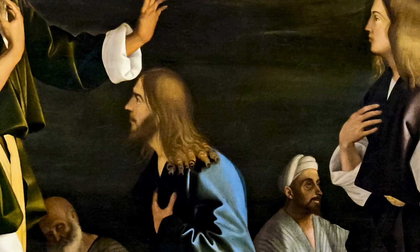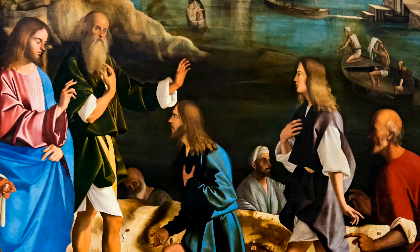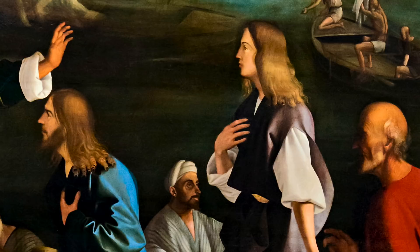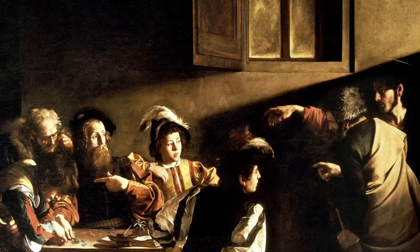Number three: the subject matter. Bassati's painting depicts the moment when Jesus called James and John, the sons of Zebedee, to be his apostles and follow him. Zebedee was a Hebrew fisherman, the husband of Salome. James and John were, along with Andrew and Peter, the first disciples called by Christ.